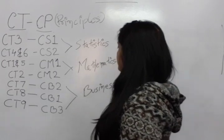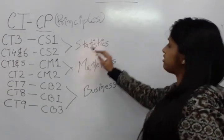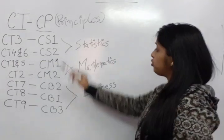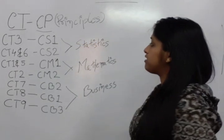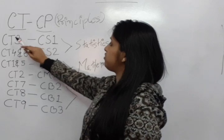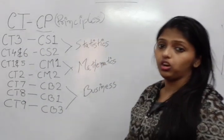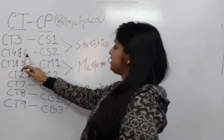Now, these 3 portions consist of, first the Statistics portion consists of 2 papers, CS1 and CS2. CS1 has the previous syllabus of CT3, and CS2 comprises the syllabus for CT4 and CT6.